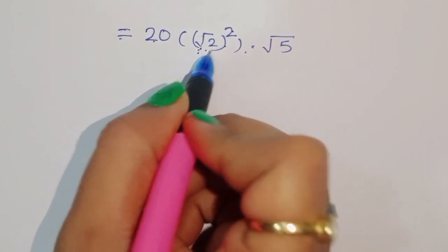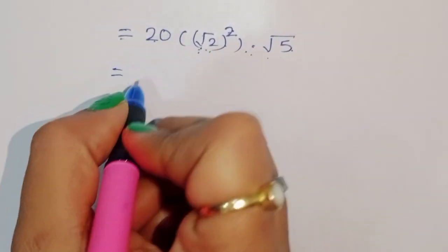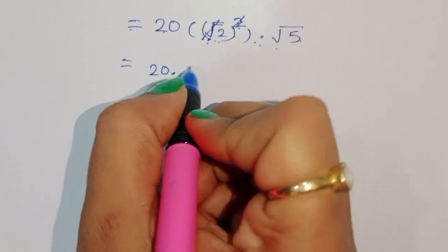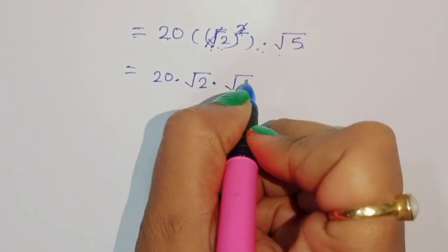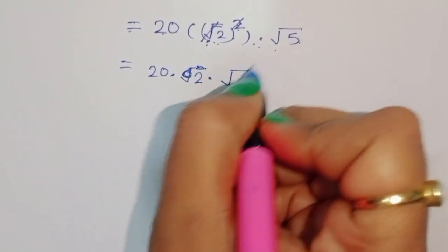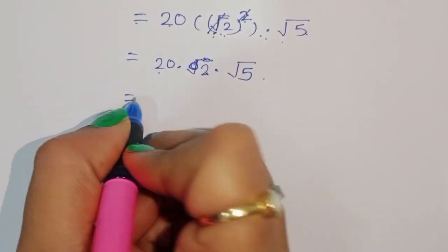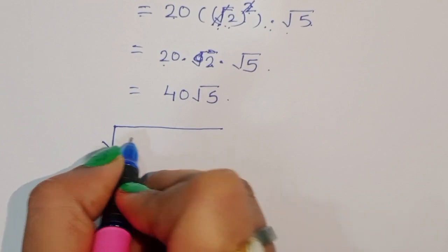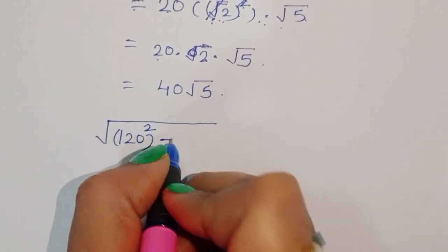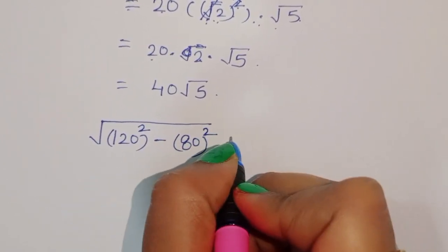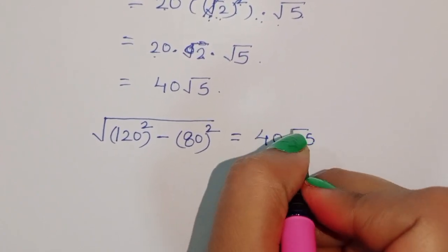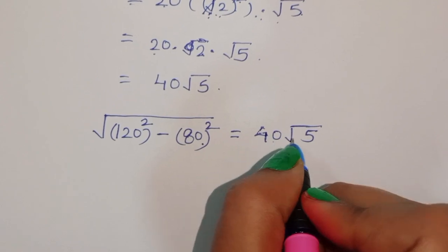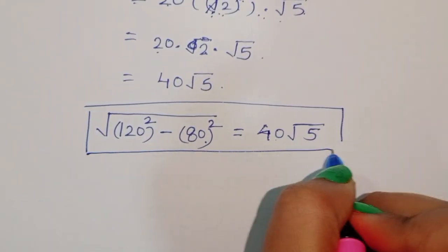That's why we get the square root of 2 squared times the square root of 5. We can write: 20 times the square root of 2 squared — since square root and square cancel — times the square root of 2 times the square root of 5. This gives us 20 times 2 times the square root of 5, equal to 40 square root of 5. So the value of the square root of 120 squared minus 80 squared is equal to 40√5. This is our solution. Thank you.